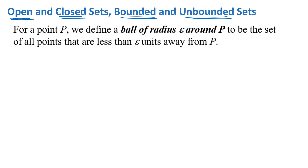I've typed these here so we don't have to spend a lot of time writing them — we want to look at some examples and make sure that we understand these definitions. So first of all, we've got a point P, and we define a ball of radius epsilon around P to be the set of all points that are less than epsilon units away from P.